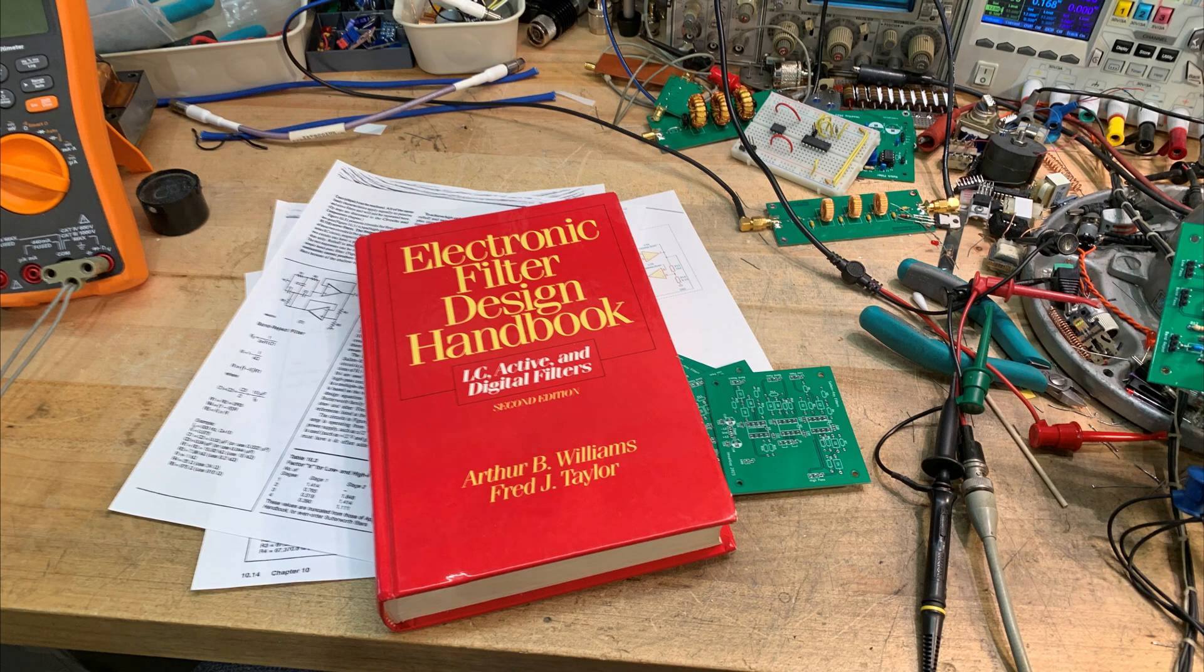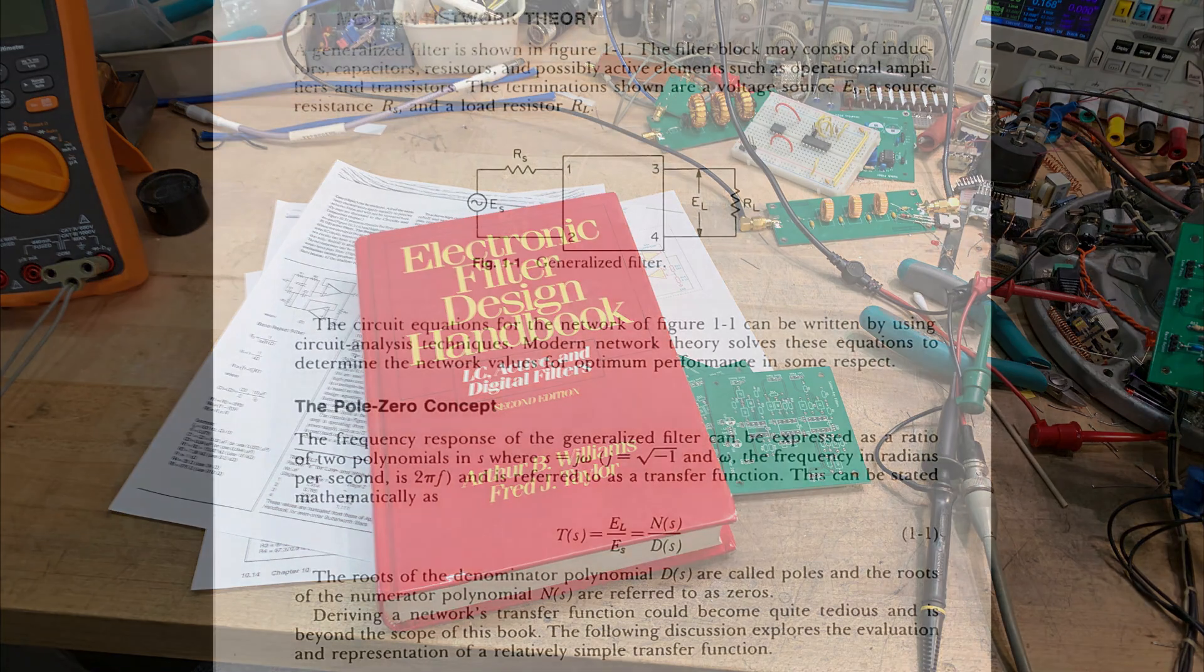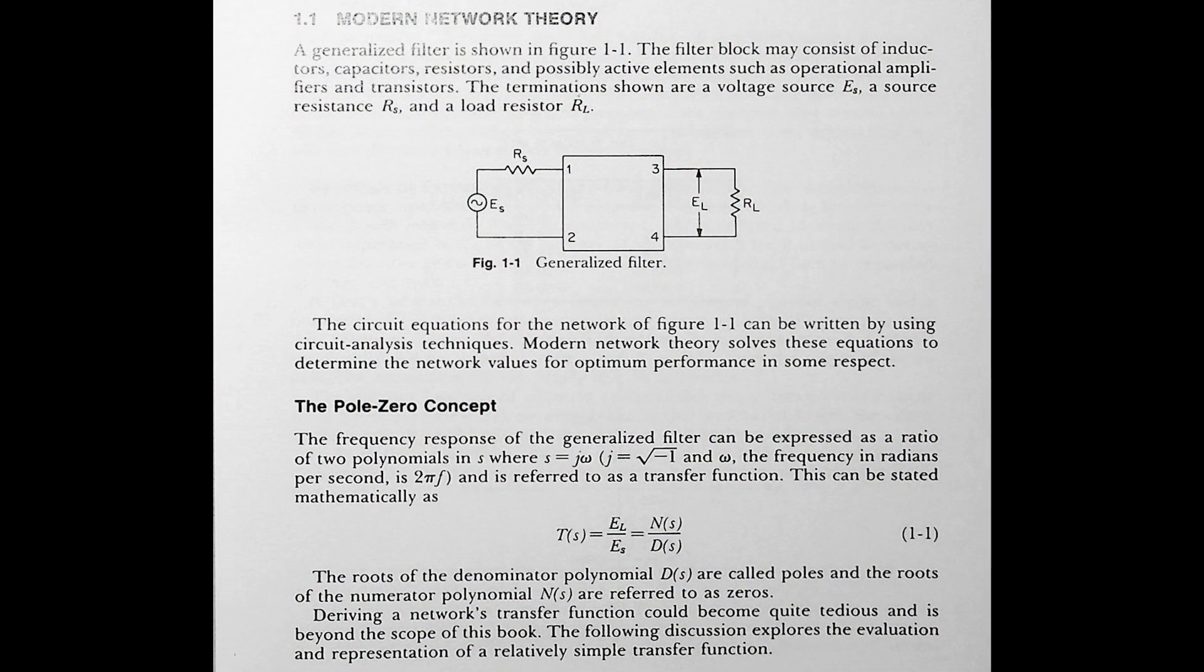this book here, the Electronic Filter Design Handbook, and it's quite good. It starts out with page one on poles and zeros, not that you really need that to do real work, but it is interesting theoretically.